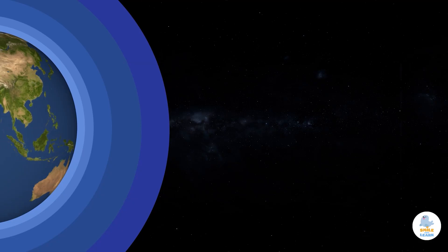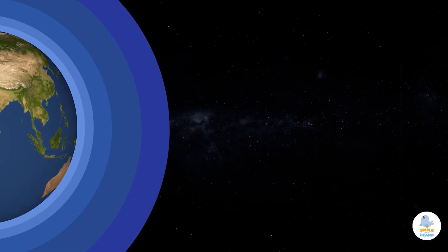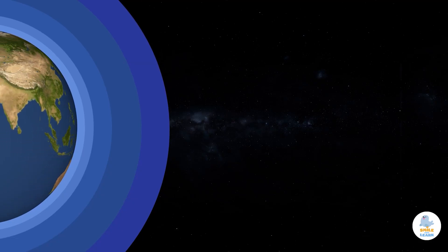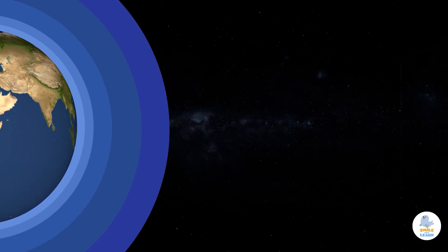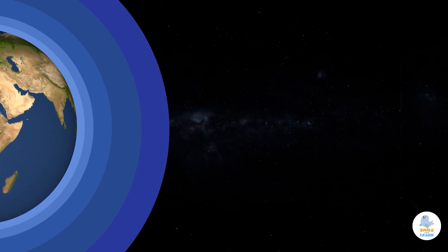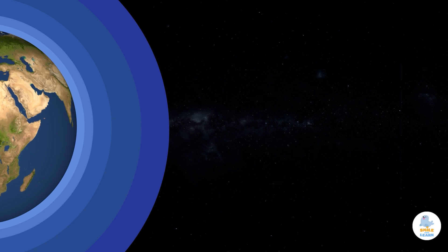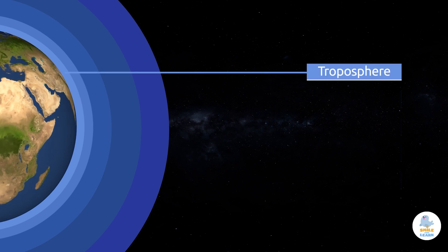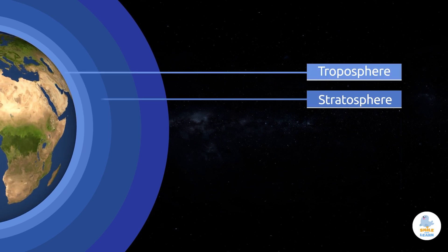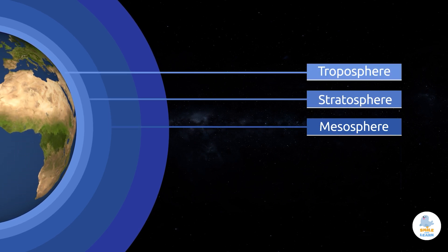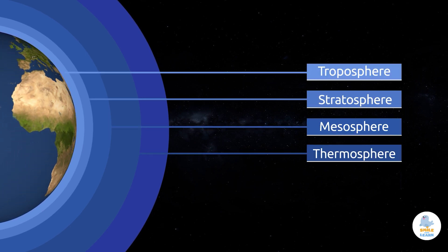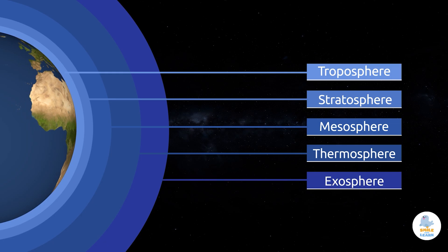Depending on how high we get, the composition of the atmosphere changes, dividing itself into five main layers: the troposphere, the stratosphere, the mesosphere, the thermosphere, and the exosphere.